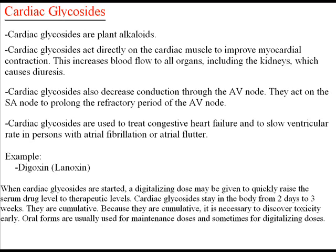We want to note the various points in the heart that cardiac glycosides affect. This explains why cardiac dysrhythmias of many kinds can be seen with toxicity. Cardiac glycosides are used to treat congestive heart failure and to slow ventricular rate in persons with AFib and atrial flutter.